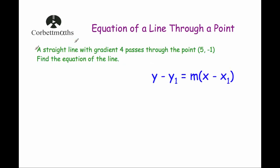Let's have a look at our first example. A straight line with gradient 4 passes through the point (5, -1). Find the equation of the line. We're going to use the formula y minus y1 equals m bracket x minus x1. So let's label the point: x1 is 5, y1 is -1, and the gradient m is 4.